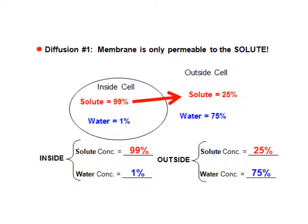In this first example we're looking at diffusion, which means we're talking about the solute moving through the cell. Now the worksheet began by telling you that there's a solute concentration inside of the cell of 99%, which means that the water concentration has to be only 1% inside of the cell. That should be labeled here.